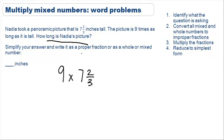Step two says convert all mixed numbers and whole numbers to improper fractions. To convert the whole numbers, remember we simply add a one as the denominator. To convert a mixed number into an improper fraction, we multiply the denominator by the whole number. Seven times three is equal to 21 and add it to the numerator, which is equal to 23.